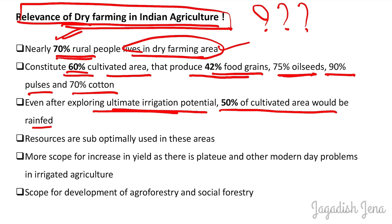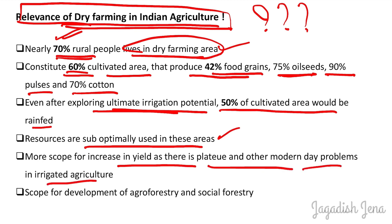There is a huge task to increase the productivity and production of dryland agriculture, and there is significant scope for increasing production from dryland farming. Resources are sub-optimally used in dryland agriculture areas, meaning their efficiency can be improved. In contrast to irrigated agriculture — which faces problems like salinity, waterlogging, multi-nutrient deficiency, and yield plateau since the Green Revolution — dryland farming still has scope for yield increases. There is also scope for development of agroforestry and social forestry in these areas.